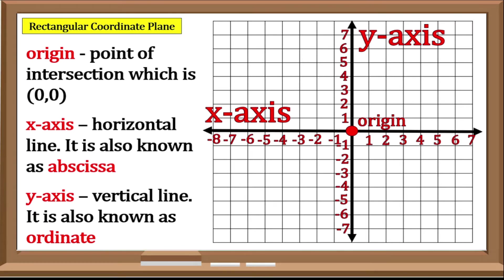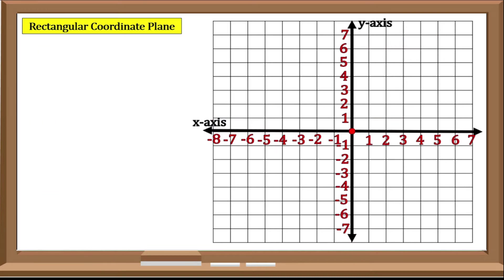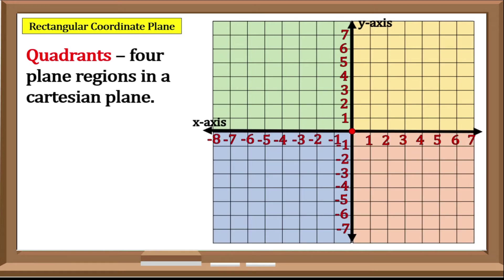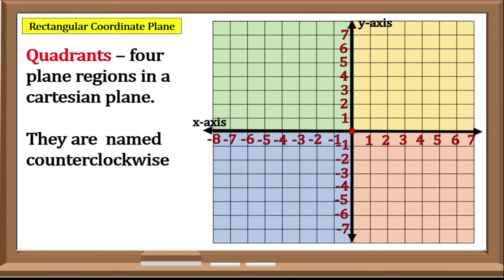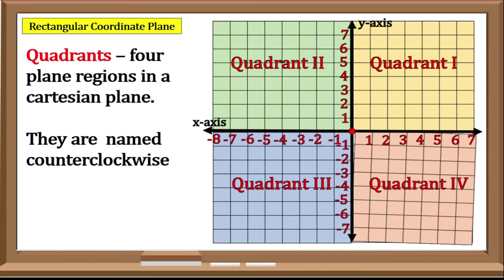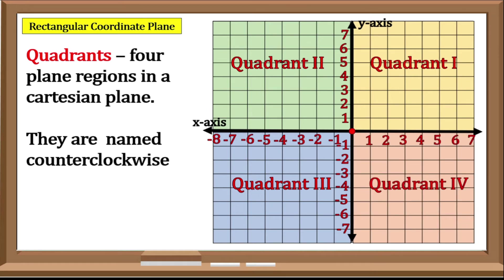As you can observe, the plane is divided into four regions called Quadrants. The quadrants are named counter-clockwise. We start at the upper right region: it is named Quadrant 1 or 1st Quadrant. Next would be Quadrant 2 or 2nd Quadrant. Lower left would be Quadrant 3 or 3rd Quadrant, and the last would be Quadrant 4 or the 4th Quadrant.